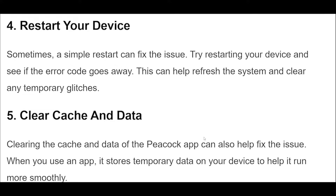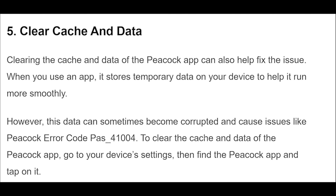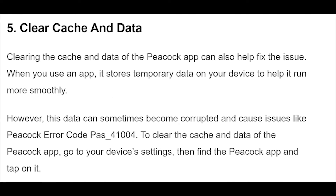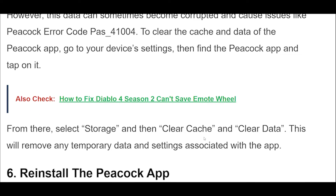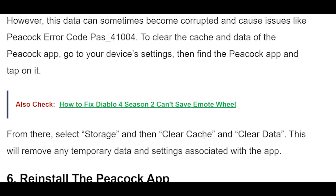Clearing the cache and data of the Peacock app can also help fix the issue. When you use an app, it stores temporary data on your device to help it run more smoothly. However, this data can sometimes become corrupted and cause issues like Peacock Error Code PAH_41004. To clear the cache and data, go to your device's settings, find the Peacock app and tap on it, then select Storage, then Clear Cache and Clear Data.